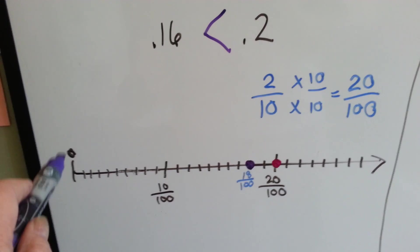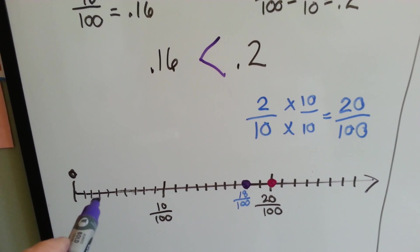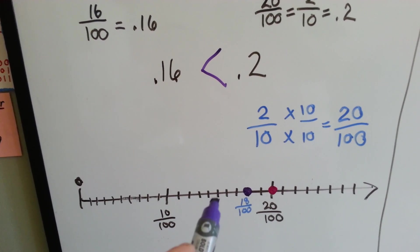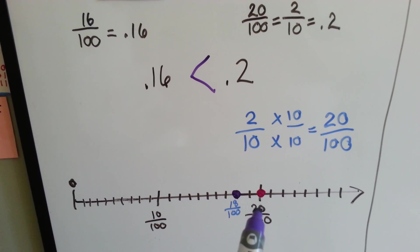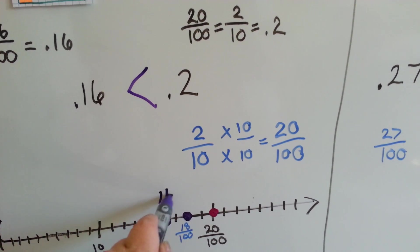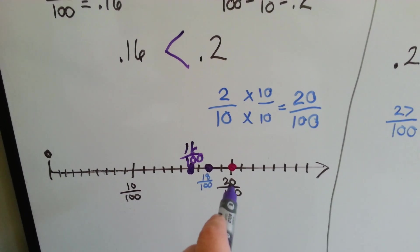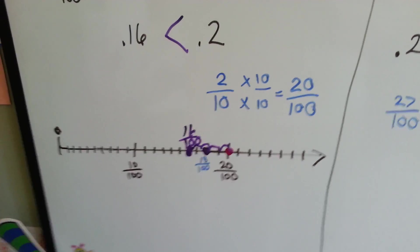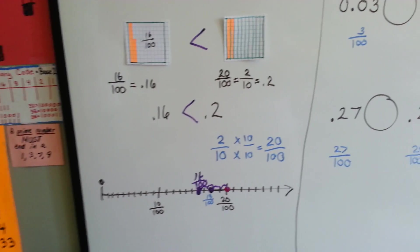If it was on a number line, with zero here and each mark being one one-hundredth, we count up: one, two, three one-hundredths... all the way to ten, then eleven, twelve, thirteen, fourteen, fifteen, sixteen, seventeen, eighteen, nineteen, twenty one-hundredths. You can see sixteen right here — that's sixteen one-hundredths — and twenty is bigger, bigger by four. So twenty-hundredths is bigger than sixteen-hundredths; two-tenths is bigger than sixteen-hundredths.